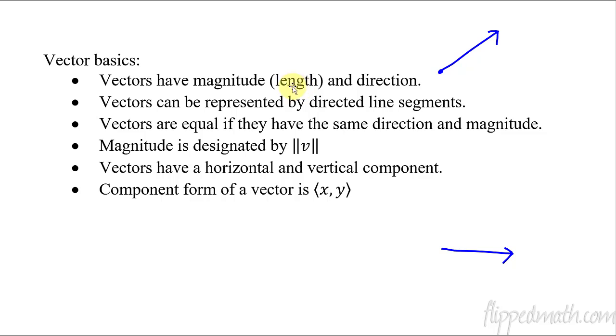Now the magnitude, or maybe think of it as the length, the length of this thing is represented by these two strange little lines. You got a two line there, and then the vector is in the middle and then two more lines. So these kind of absolute value symbols twice is kind of like what it looks like. That's how you talk about the magnitude of the vector. And magnitude is talking about the length of it.